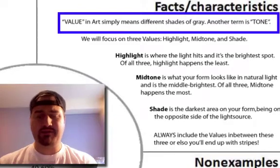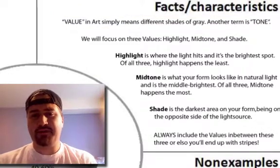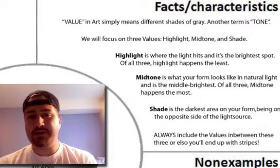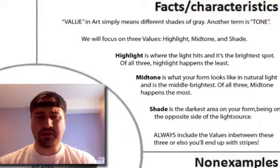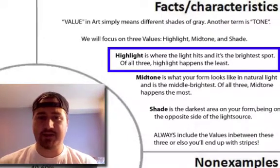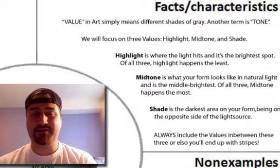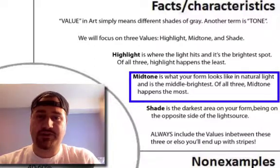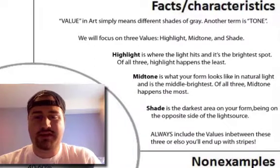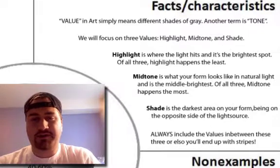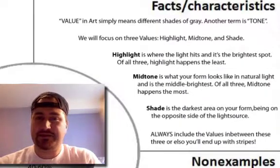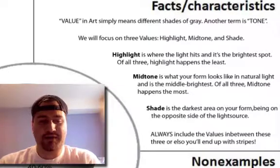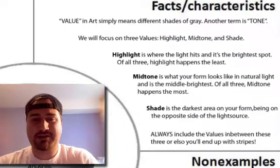To summarize: value simply represents different shades of gray, and we're going to focus on three values in this course — highlight, mid-tone, and shade. That applies not just to drawing, but also to colored pencil and painting. Highlight is where the light directly hits — the white part of your paper — and is the least amount, generally between 5% and 10%. Mid-tone is the natural appearance of your form in natural light and is the most, generally between 40% to 60%. Shade is the darkest area, on the opposite side of the light source, generally between 20% to 30%. The reason we use value is because it's closest to nature, and it makes your work look realistic.